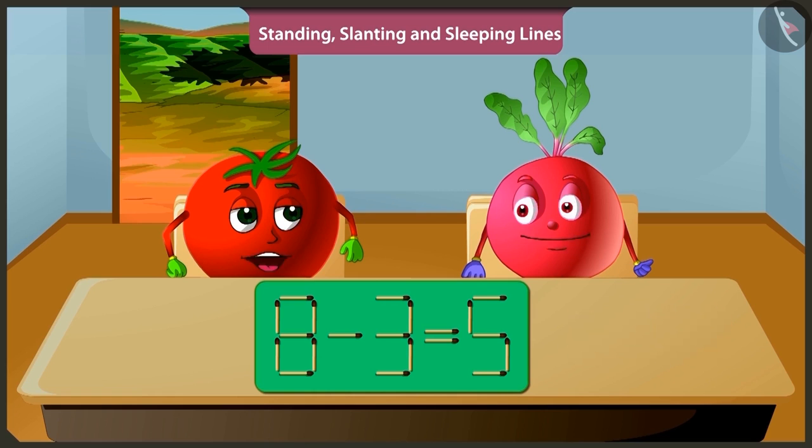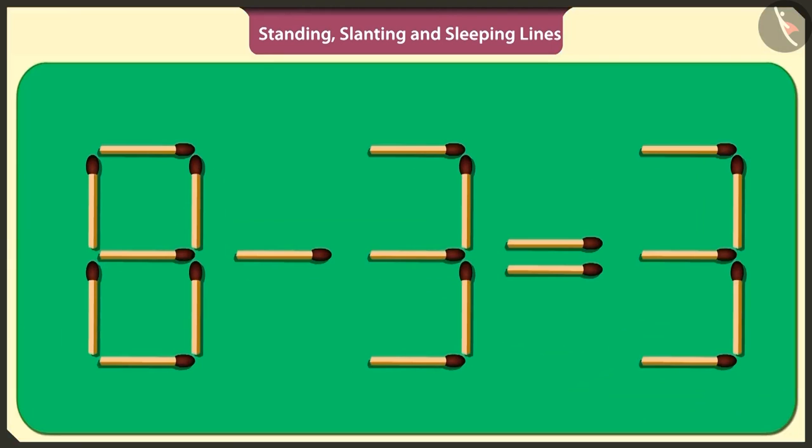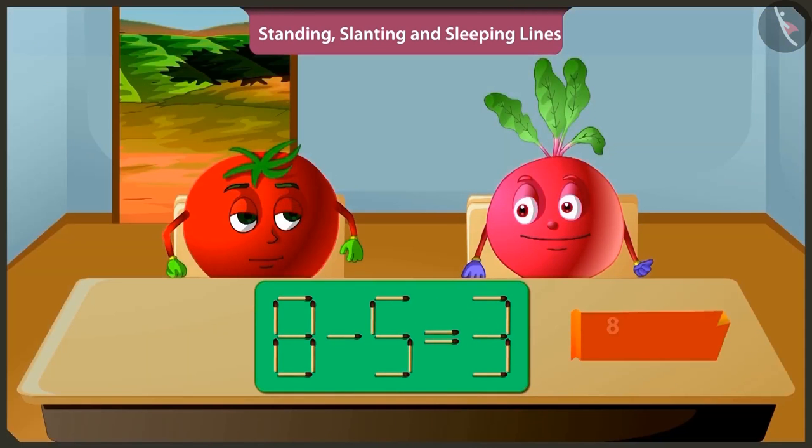Pittu, there is another way to solve this puzzle. What's that? Look, now out of the subtracted number three in this puzzle, by removing this standing matchstick and placing it vertically here, then three is converted to five and thus the puzzle will be solved. Oh yes, when we subtract five from eight, we get three.